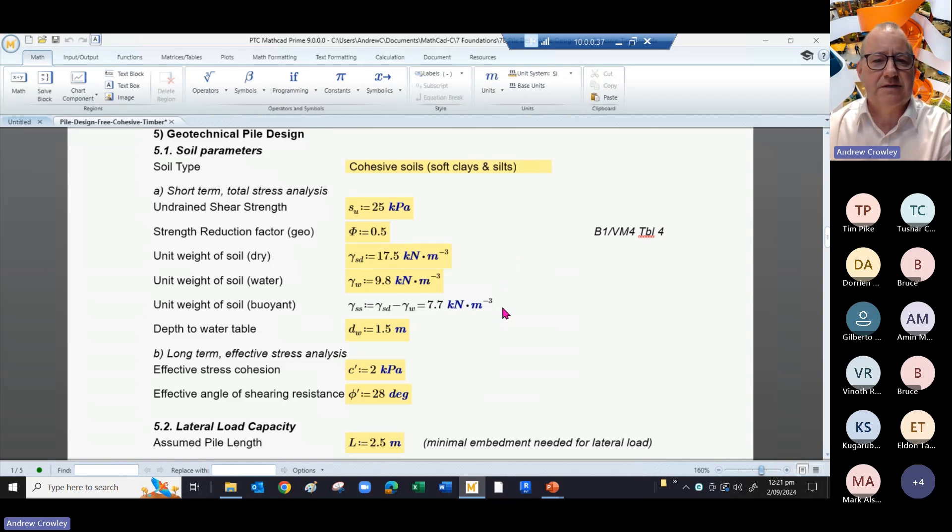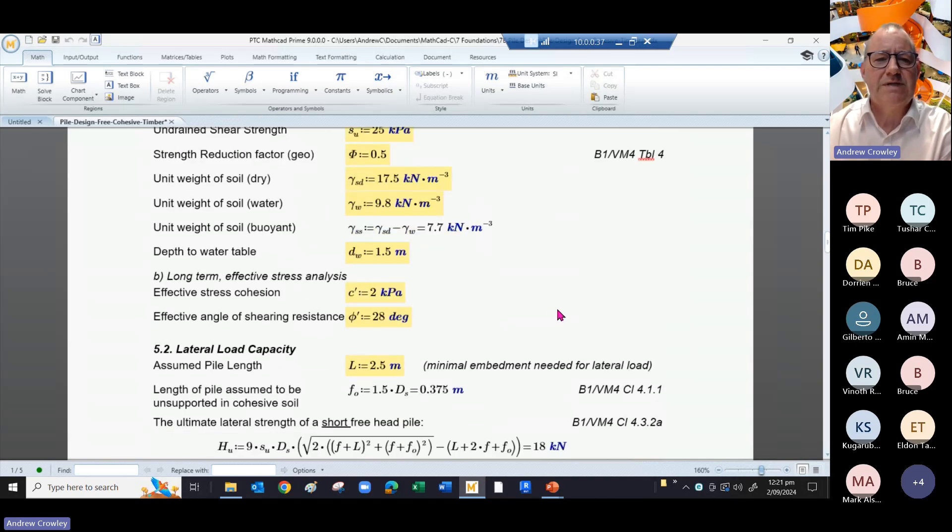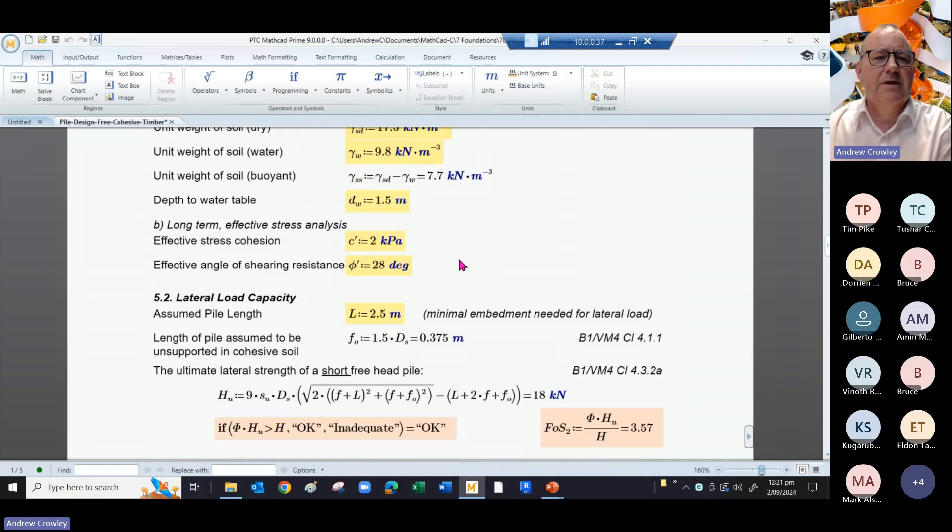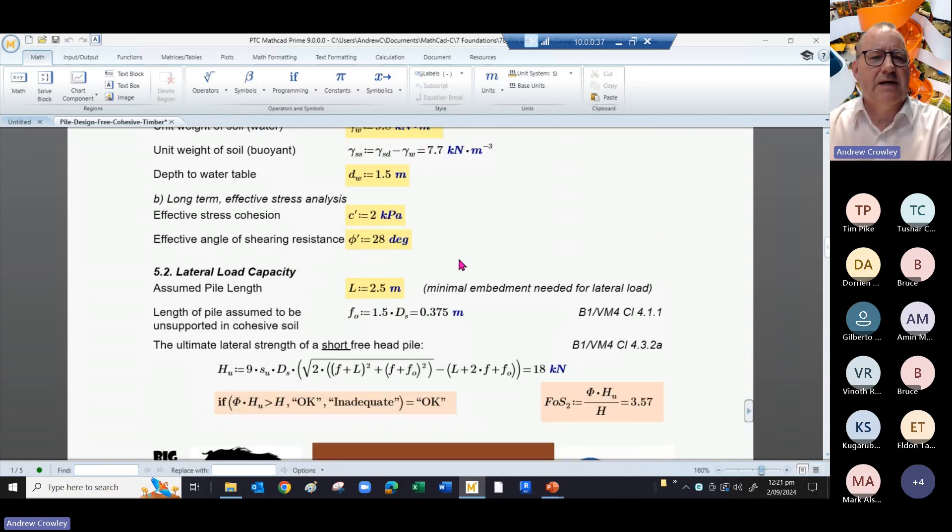We can work out what the buoyant weight is by deducting the unit weight of water. We're saying that our depth of the water table is at one and a half meters down.